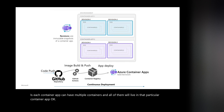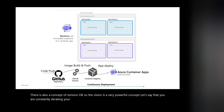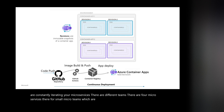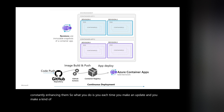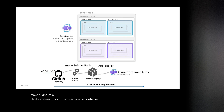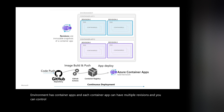There is also a concept of revision, which is a very powerful concept. Let's say you are constantly iterating your microservices — there are four microservices and four small micro teams each working on their service and constantly enhancing them. Each time you make an update and create a next iteration of your microservice or container app, it creates a new revision. Think of it: environment has container apps, and each container app can have multiple revisions. You can control how you send traffic to those revisions, and we will look at that in the demo.